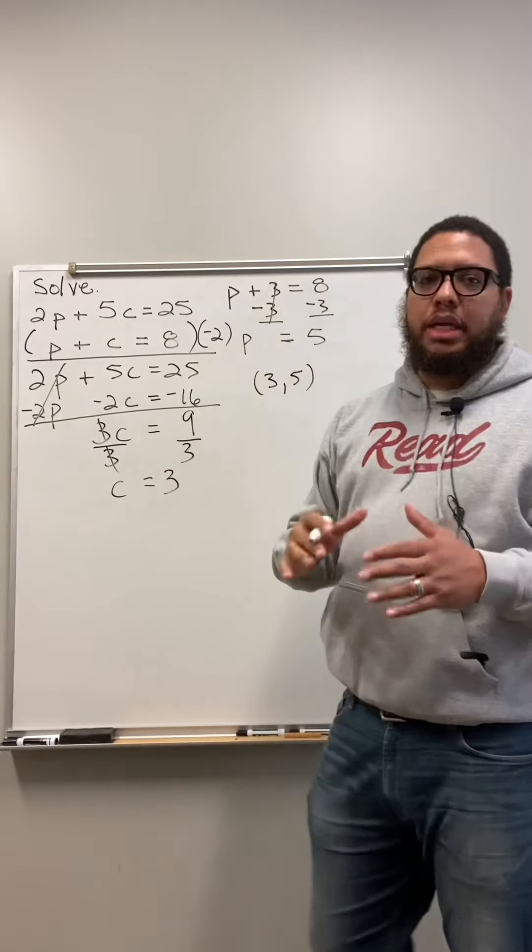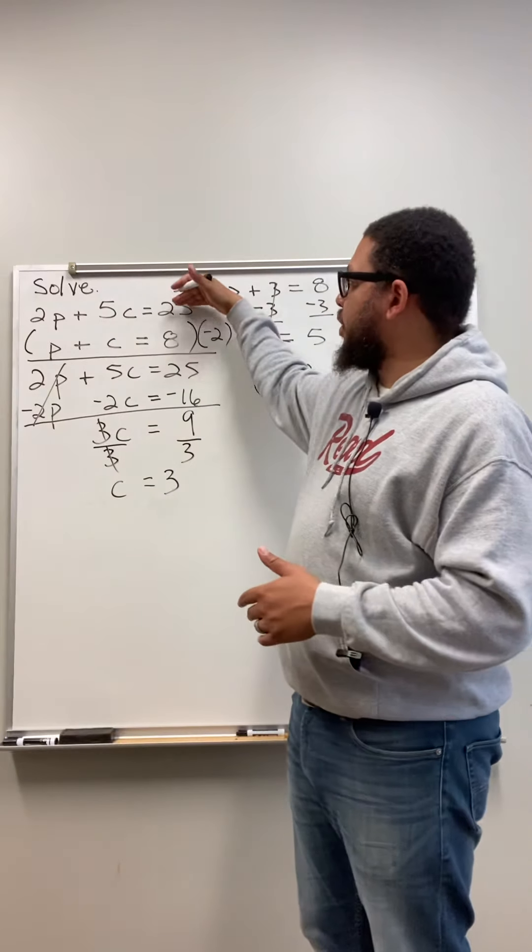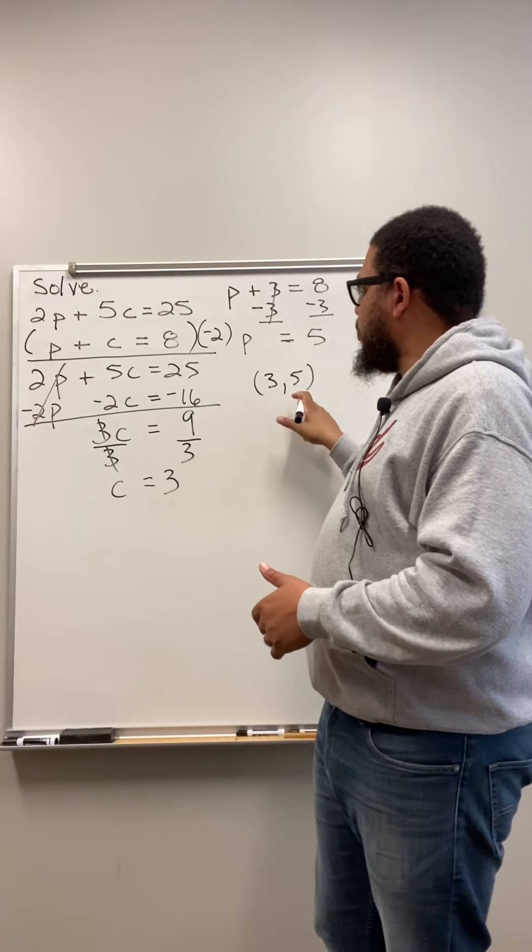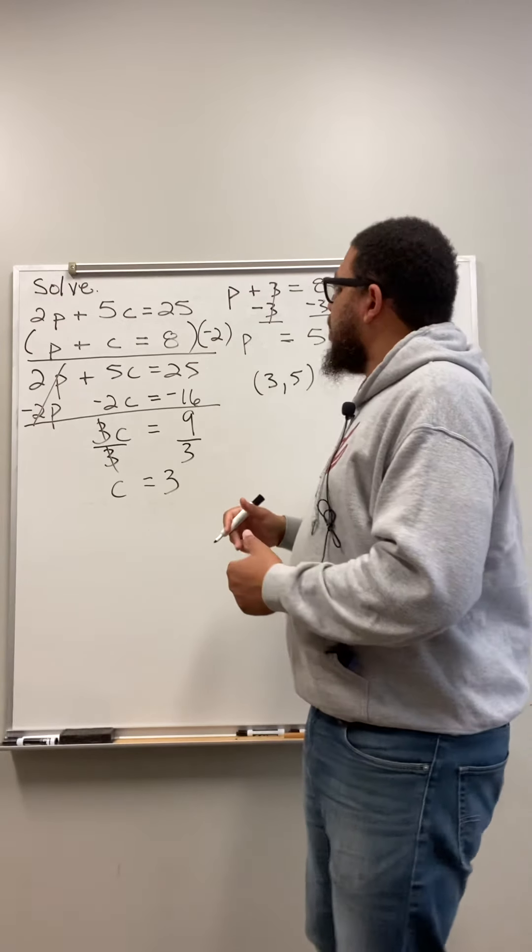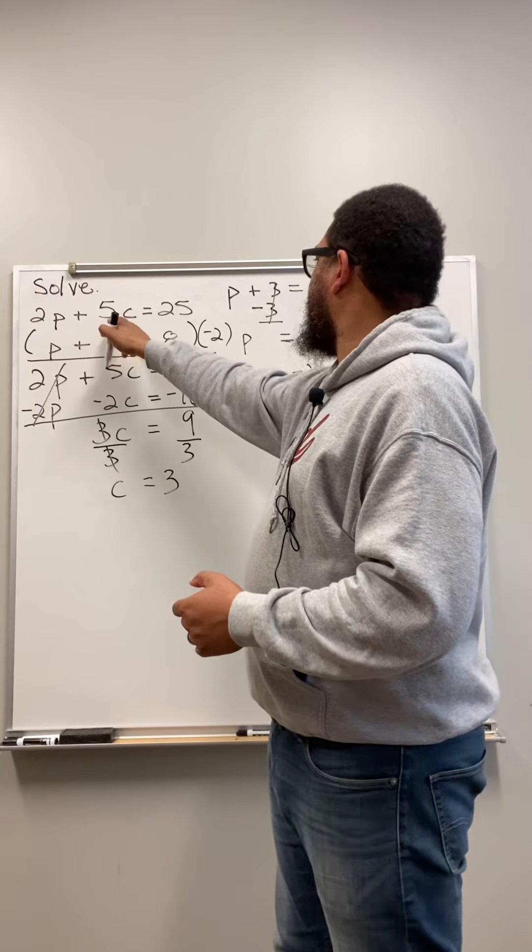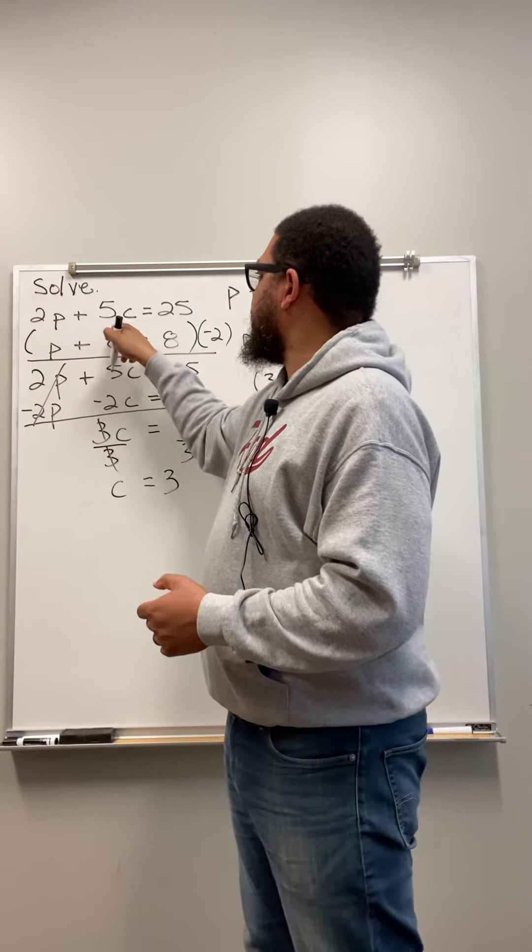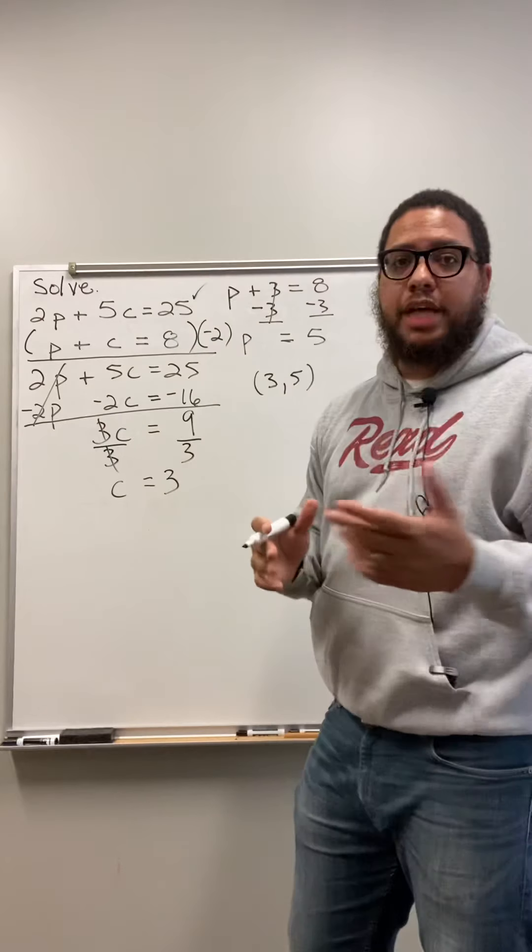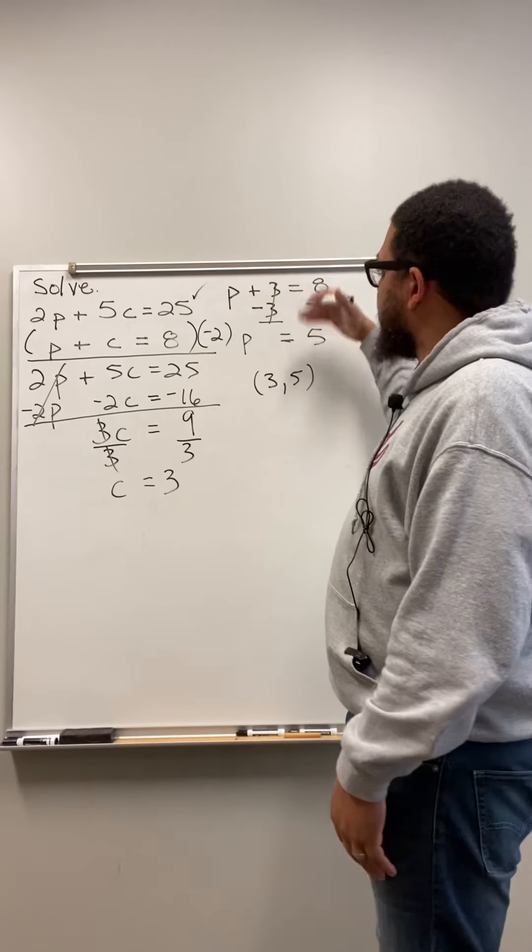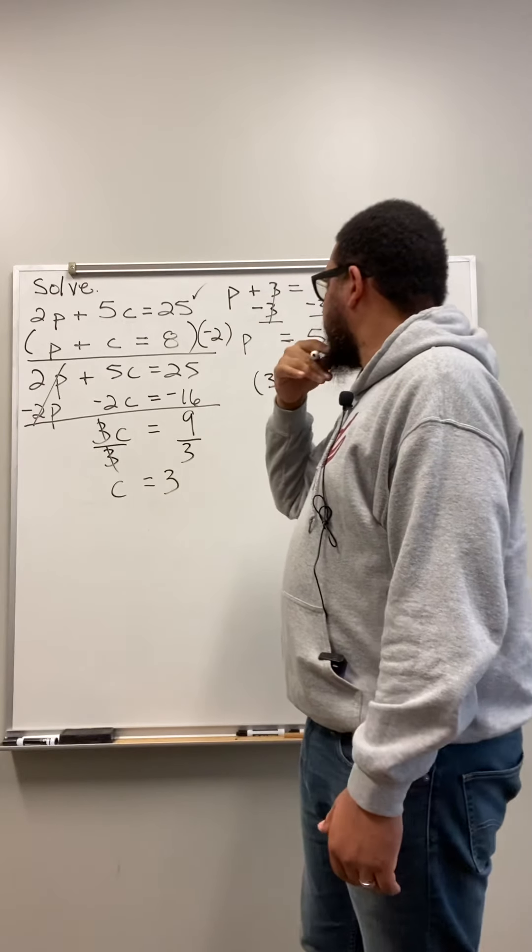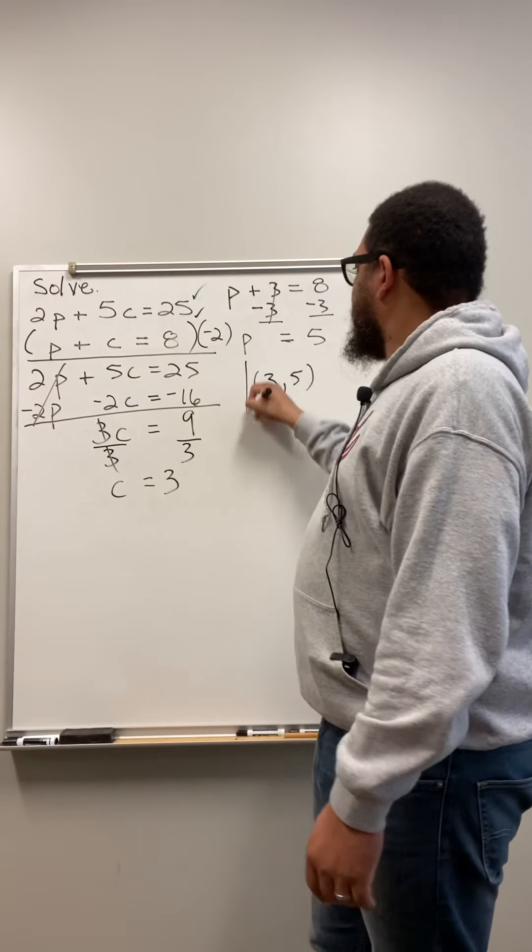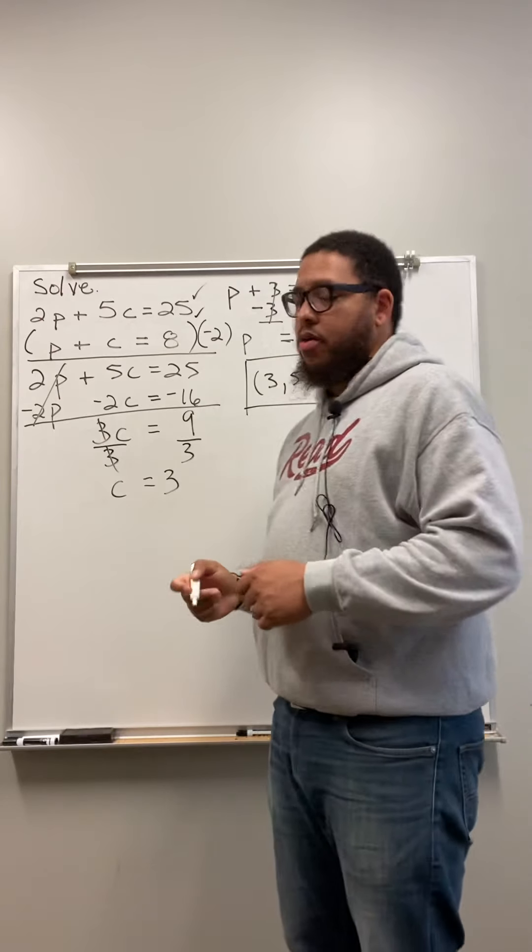But we're not done. You should always get in the habit of checking over your work. So we go back to both of these equations. Plug in my C value and my P value. And make sure that everything checks out. So P is 5. So 2 times 5 is 10. 10 plus 5 times 3 is 15. So 10 plus 15 equals 25. It works for the top equation. Now we already know it's going to work for the bottom equation because I just used the bottom equation to solve for P. But just for the sake of doing it, let's do it anyway. So 5 plus 3 equals 8. And we know that. So this is proof that this is a correct answer.